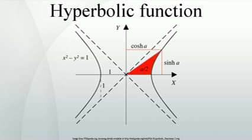Hyperbolic cosecant (csch or cosech), hyperbolic secant (sech), and hyperbolic cotangent (coth), corresponding to the derived trigonometric functions.